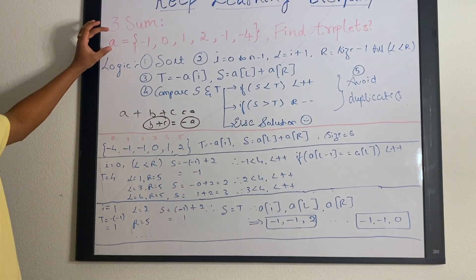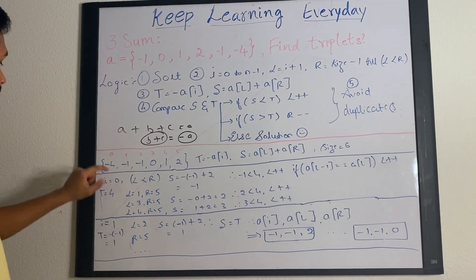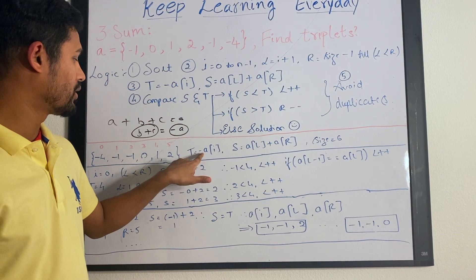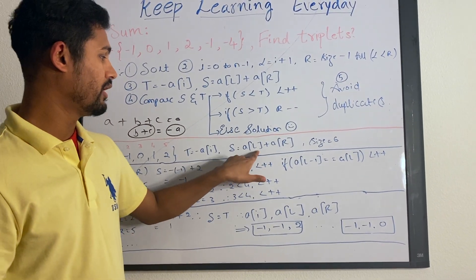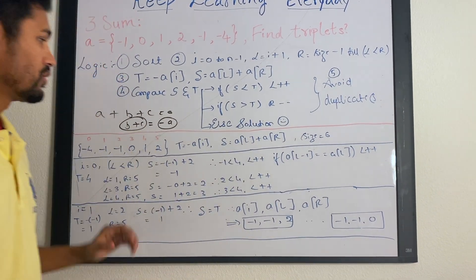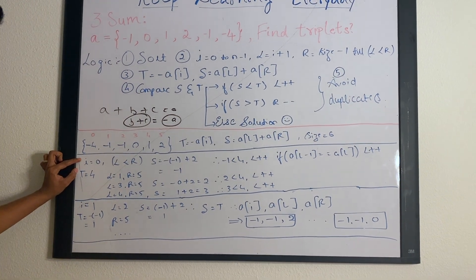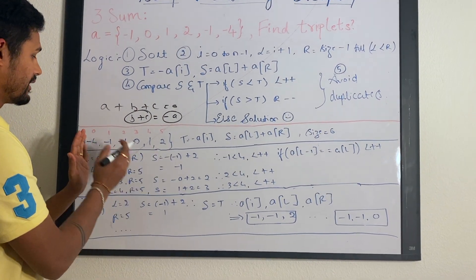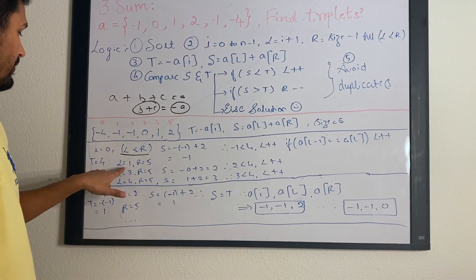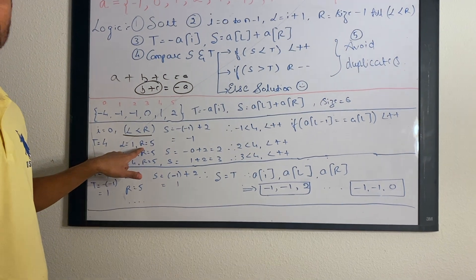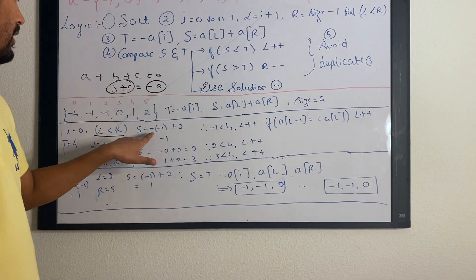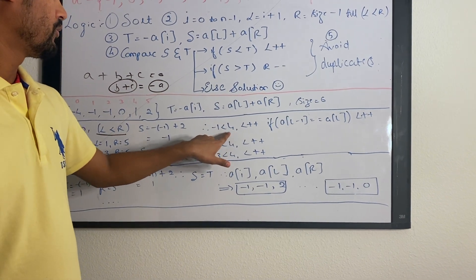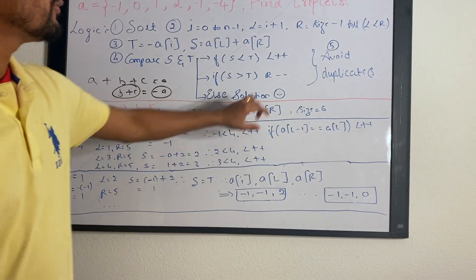Here is the example. After sorting, the array looks like: -4, -1, -1, 0, 1, 2. The target always equals negative A[I] and sum equals A[L] plus A[R]. When I equals zero, target is 4, which is negative of -4. Initially L is 1 (I+1) and R is 5 (size-1). The sum is A[L] + A[R] = -1 + 2 = 1. Since -1 is less than 4 we increment L.